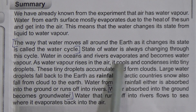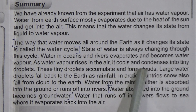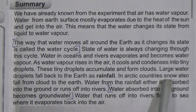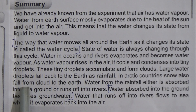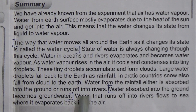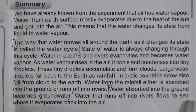The state of water is always changing through this cycle. Water in oceans and rivers evaporates and becomes water vapor. As water vapor rises into the air it cools and condenses into tiny droplets. These tiny droplets accumulate and form clouds. Large water droplets fall back to the earth as rainfall. In arctic countries, snow also falls from clouds to the earth. Water from rainfall is either absorbed into the ground or runs off into rivers. Water absorbed into the ground becomes groundwater, and water that runs into rivers flows to the sea, where it evaporates back into the air.